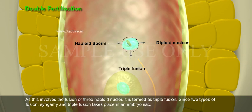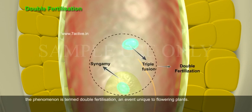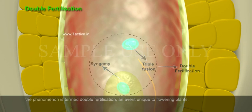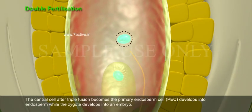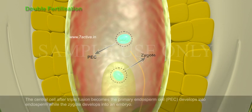Since two types of fusion, syngamy and triple fusion, take place in an embryo sac, the phenomenon is termed double fertilization, an event unique to flowering plants. The central cell after triple fusion becomes the primary endosperm cell (PEC), develops into endosperm, while the zygote develops into an embryo.